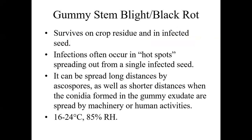Gummy stem blight also survives on infested crop residue and in infected seed. We often see infections occur in hot spots where one single infected seed has taken a plant down and then it spreads out from there, causing quite high harvest losses. You don't always get really strong symptoms of foliar disease before you see it, so having a good preventative program can make a difference. It can be spread long distances as well as shorter distances. The ascospores can blow in the wind, but that gummy exudate also has conidia in it, so moving through with machinery or foot traffic can spread those spores through the crop. It's a cooler to moderate temperature, high humidity disease.